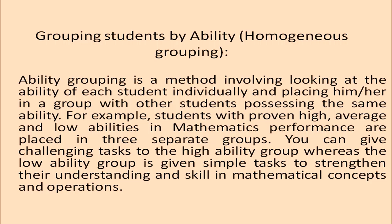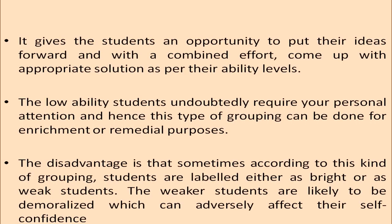Grouping students by ability, or homogeneous grouping, involves looking at each student's ability and placing them with others of similar ability. For example, students with high, average, and low abilities in mathematics are placed in three separate groups — the high ability group is given challenging tasks while the low ability group is given simpler tasks to strengthen their understanding. The low ability students require the teacher's personal attention, and this type of grouping can be used for enrichment or remedial purposes.